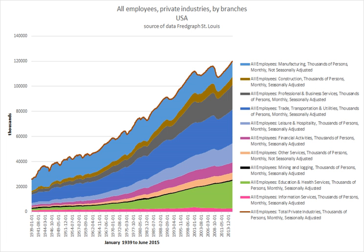Employees work in return for payment, which may be in the form of an hourly wage, by piecework or an annual salary, depending on the type of work an employee does or which sector she or he is working in. Employees in some fields or sectors may receive gratuities, bonus payment or stock options. In some types of employment, employees may receive benefits in addition to payment.